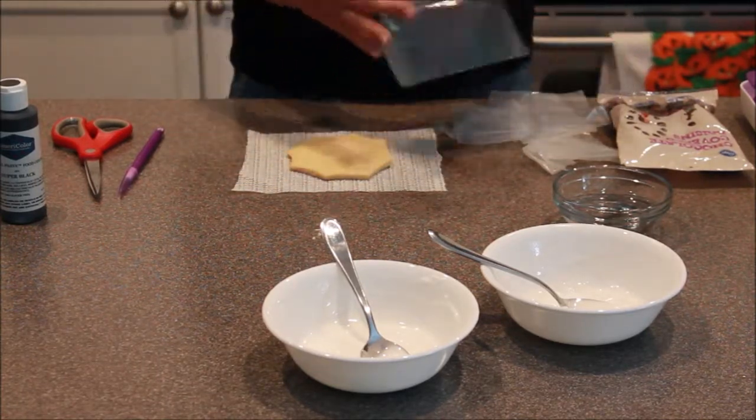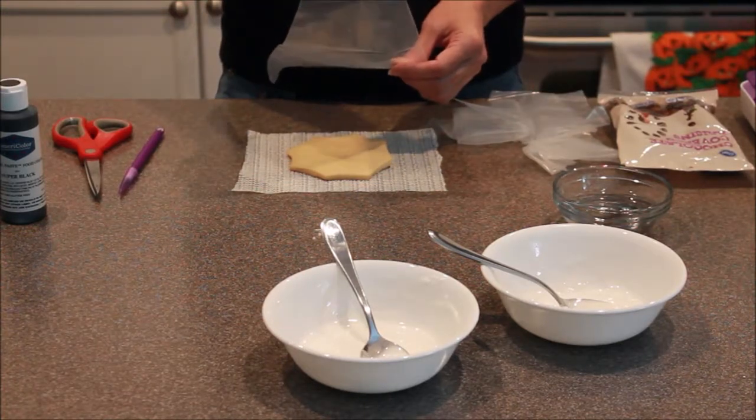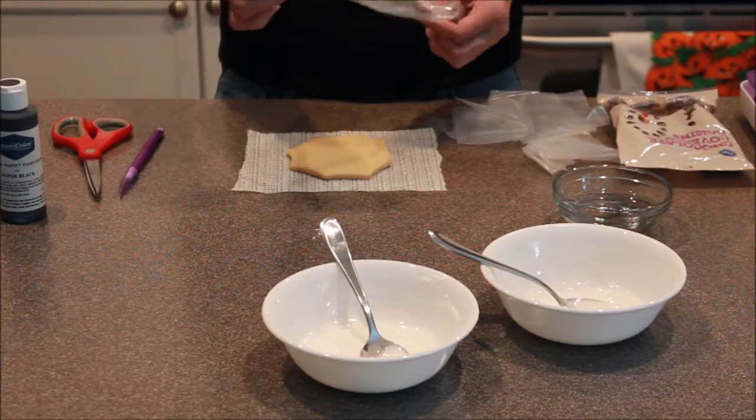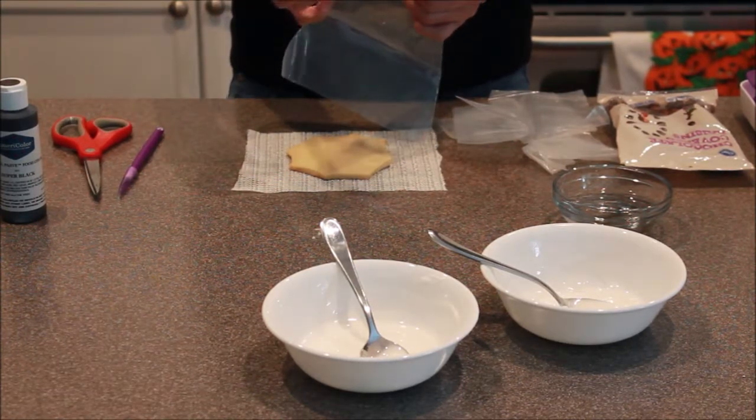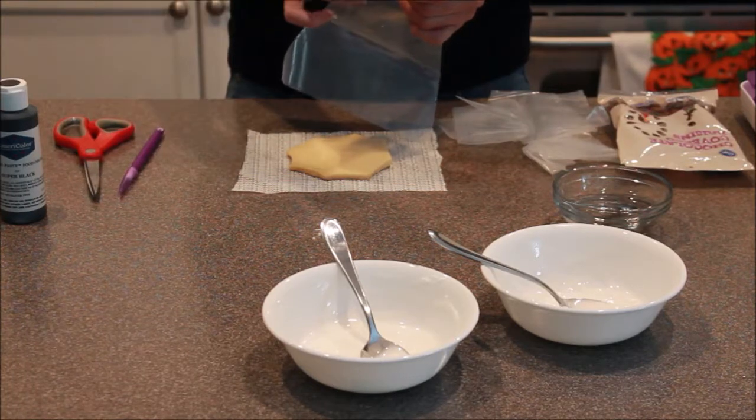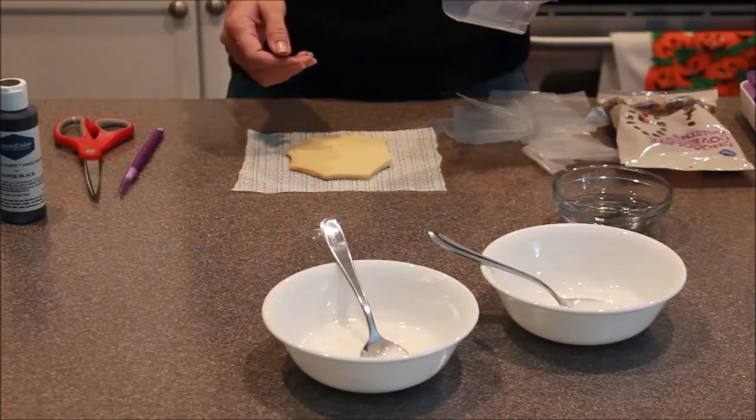Then we're going to move our icing into our piping bags. Now you can see this one has a tip and there is no hole in it for a piping tip. You don't actually need one for this. You can just use scissors and cut the hole as big or as small as you need it. So we're going to get these icing moved over and then we'll be back.